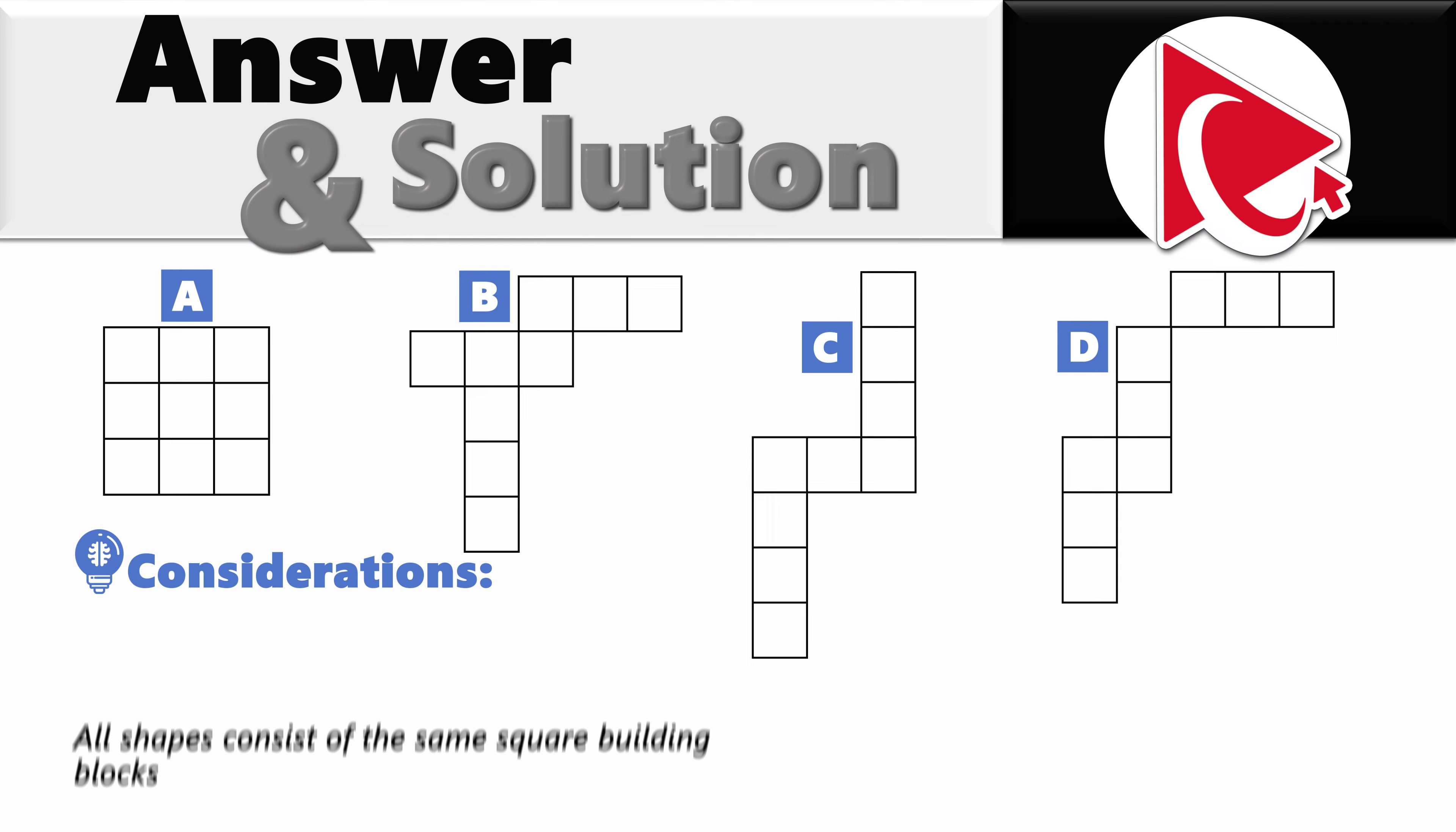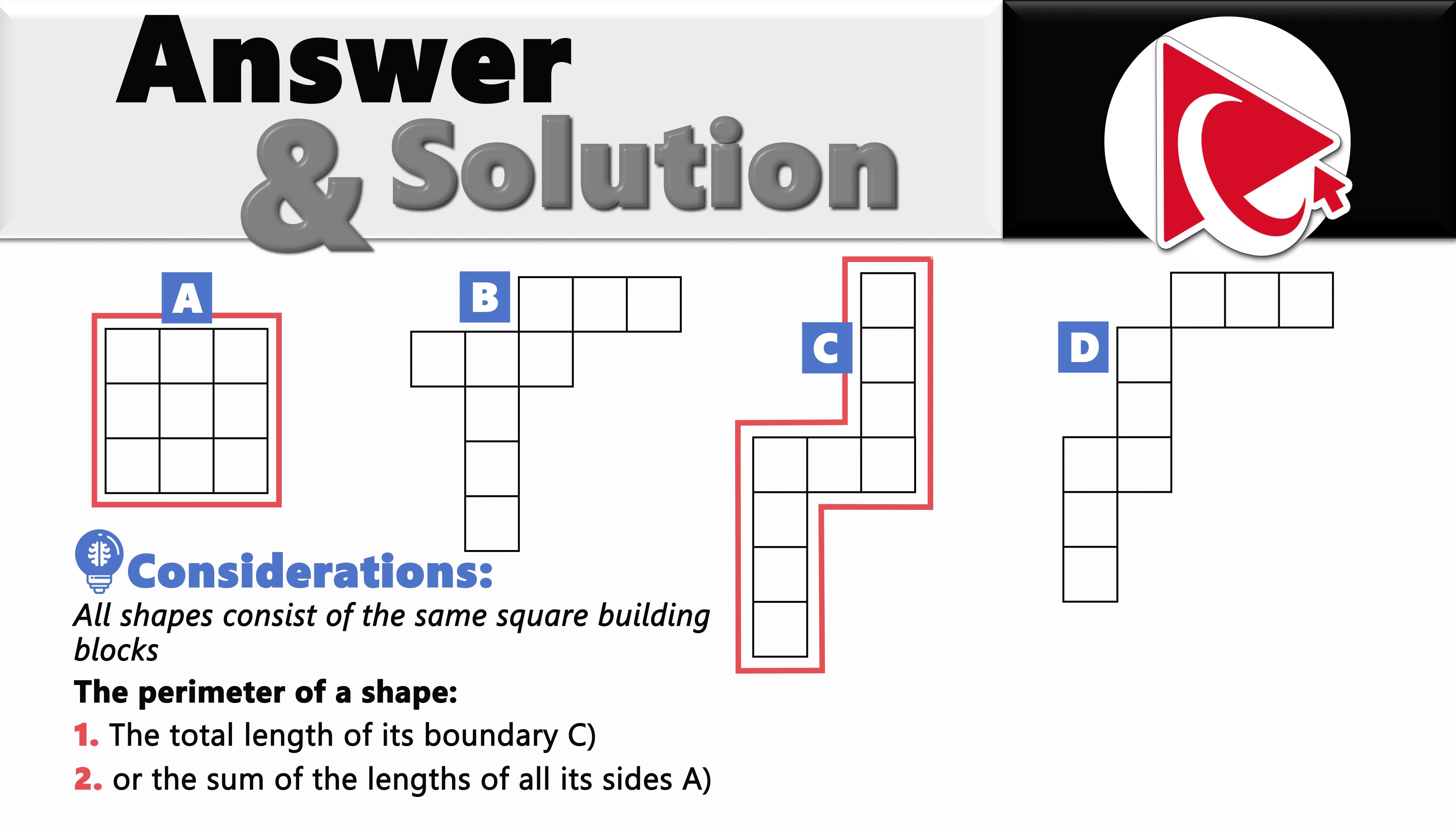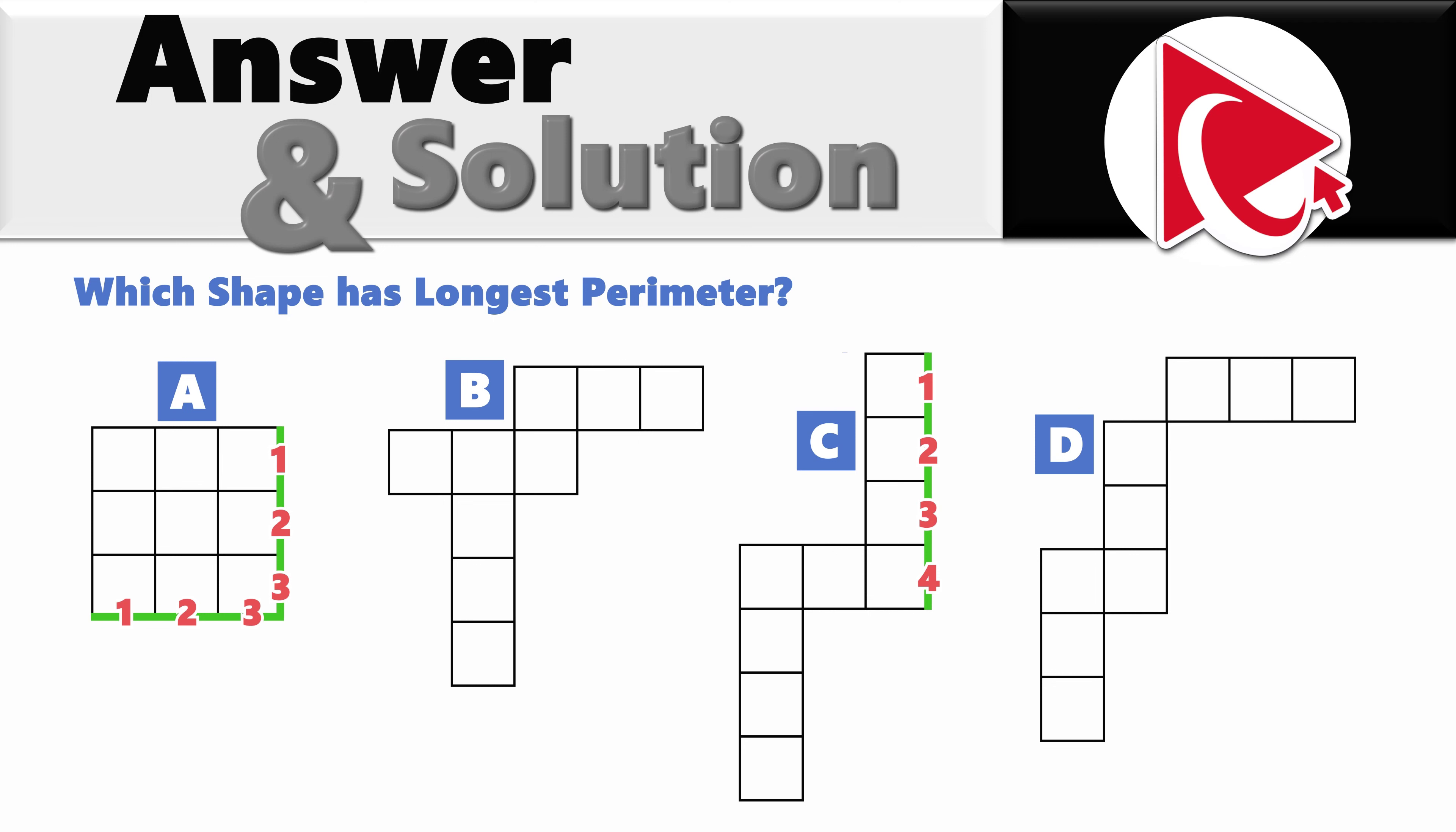To solve this challenge, all shapes here consist of the same square building block. But because shapes are so dramatically different, the perimeter of the shape can be calculated in two different ways. The first way is to calculate the total length of the boundaries. The second way might be sum of length of all of the sides. Because the squares are all the same, we can use square as one unit in the calculation. To calculate the perimeter of shape A, we need to sum up both of its sides and multiply it by 2. 3 plus 3 in parentheses multiplied by 2 equals 12. Perimeter of shape A can be measured as 12 units.